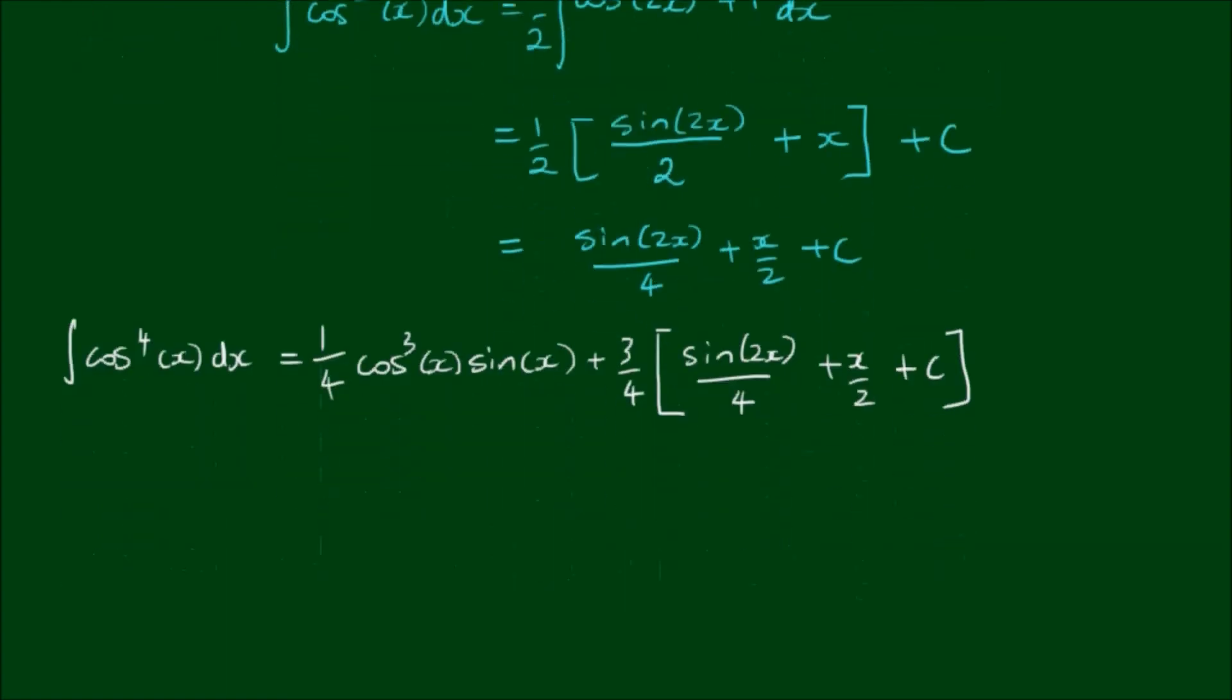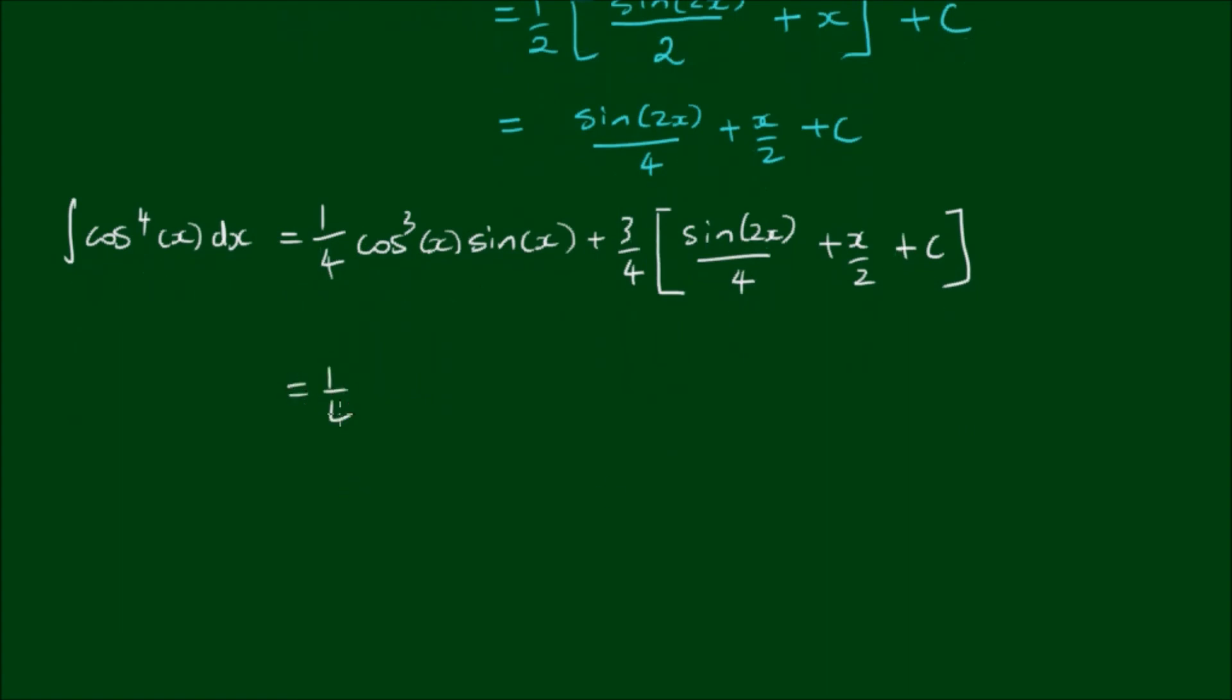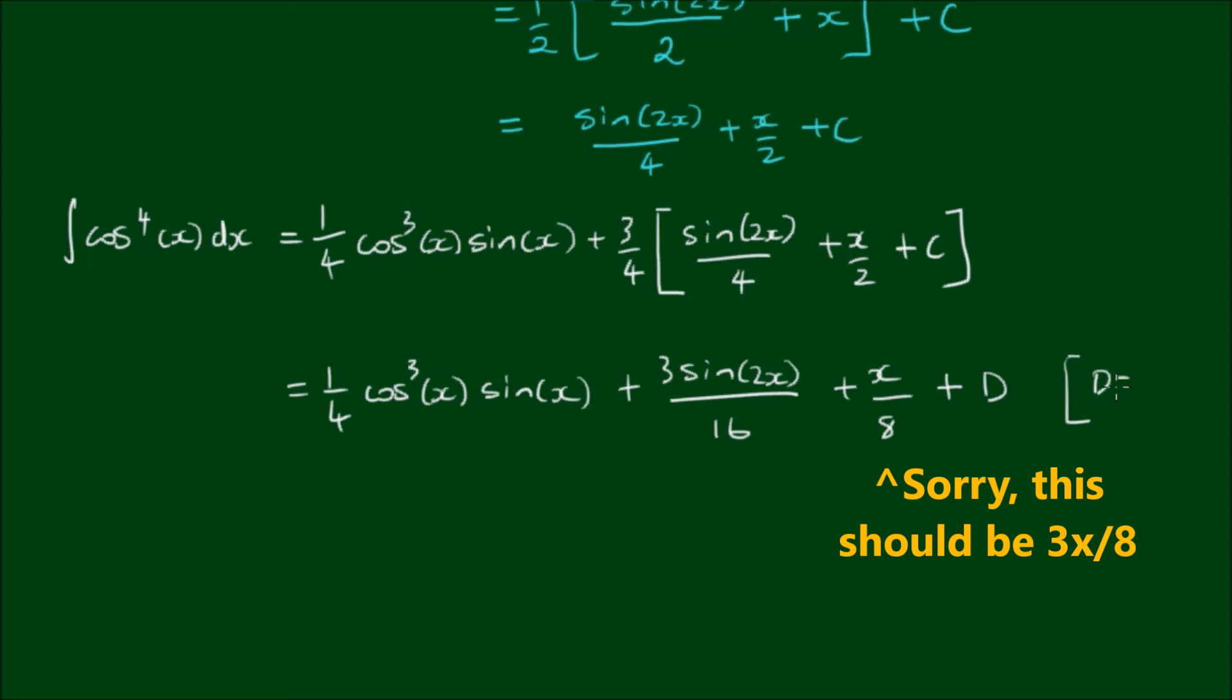So the result simplifies down to 1 quarter by cosine to the 3rd power of x by sine of x plus 3 sine of 2x on 16 plus x on 8 plus d where d is equal to 3 quarters of c. So d and c are both still arbitrary constants of integration. So this is the final result that we are looking for, using the reduction formula to find the integral of cosine to the 4th power of x.